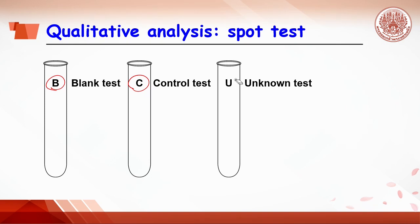The last test tube labeled with U meaning unknown ion. The unknown sample will be added if it reacts with the same reagent with control. The positive or negative test will be shown depending on what ions in the unknown.